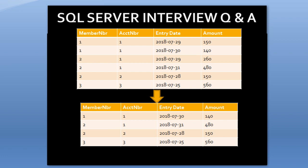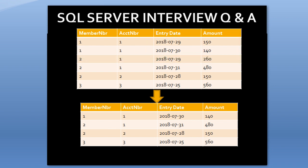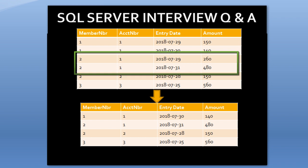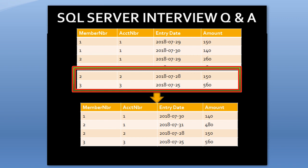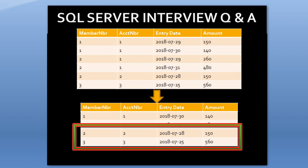We want to get the latest payment information. When we look at member number one and account number one, we have two rows in our input table — the first row's entry date is the 29th and the second row's entry date is the 30th. So the 30th is the maximum entry date, and this row will move to our output. For member number two and account number one, we have two rows with entry dates of the 29th and 31st, so the 31st row moves to the output. Member number two account number two and member number three account number three each have only a single row, so those rows also move to the output.